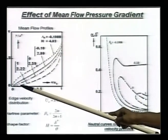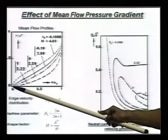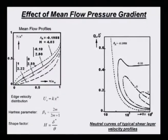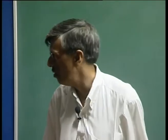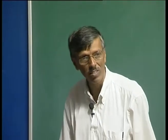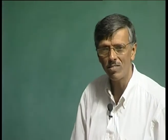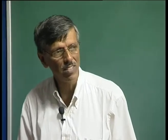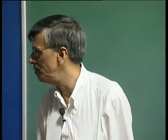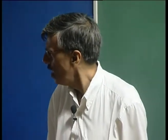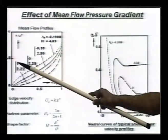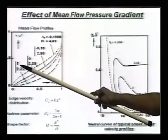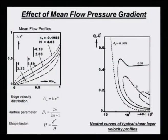For the Blasius profile, the point of inflection is actually on the surface, which is of no consequence, because Rayleigh's theorem does not consider that flow to be unstable. Whereas the last curve shown here, for which beta_h is equal to 1, corresponds to stagnation flow.